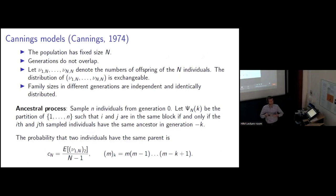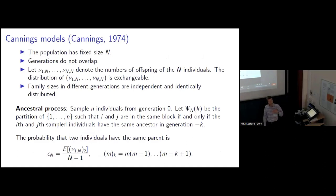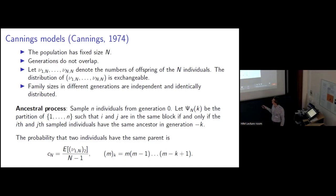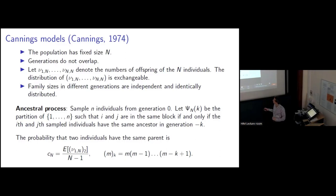I want to introduce a larger collection of population models known as Cannings models, introduced by Cannings in 1974. As in the Wright-Fisher model, we assume that the population has fixed size N and we're working in discrete time with non-overlapping generations. We let nu_1^N through nu_N^N denote the numbers of offspring of the N individuals in some generation. We only assume that the distribution of this vector of family sizes is exchangeable, so that there's no significance to the order in which the individuals are listed. We also assume that these family size vectors in different generations are independent and identically distributed.